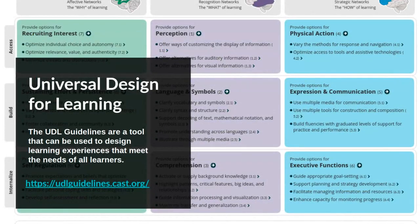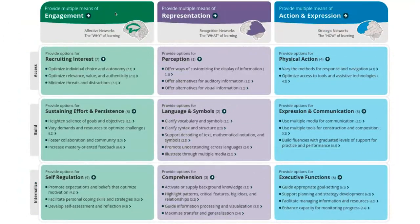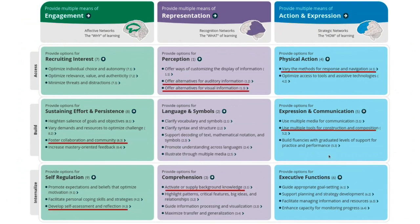UDL is a framework and tool that can be used to design experiences - the link is there, I do recommend you look at it. In a nutshell, it has three main concepts: multiple means of engagement, multiple means of representation, and multiple means of action and expression - relating to access, building, and internalizing content. Key well-being links include fostering collaboration and community, developing self-assessment and reflection opportunities, and offering alternatives for auditory and visual information. For example, if you're doing a podcast, create a sheet with images or diagrams you're describing.